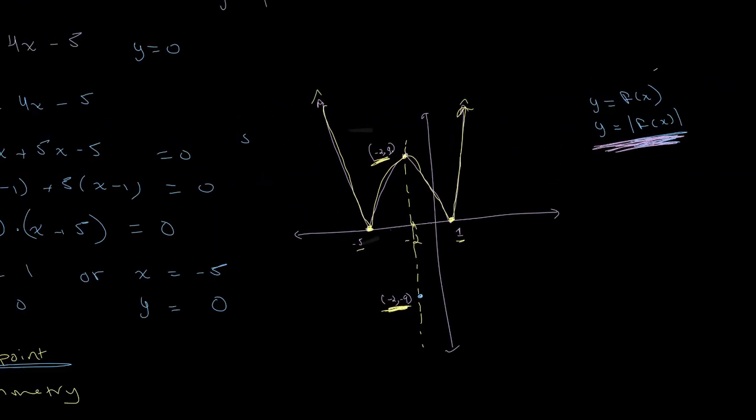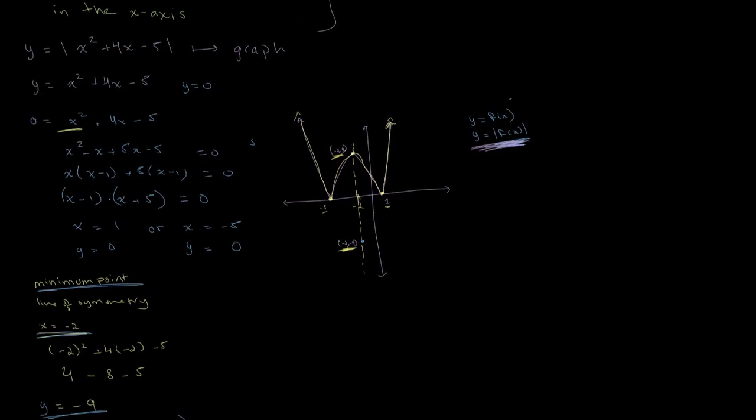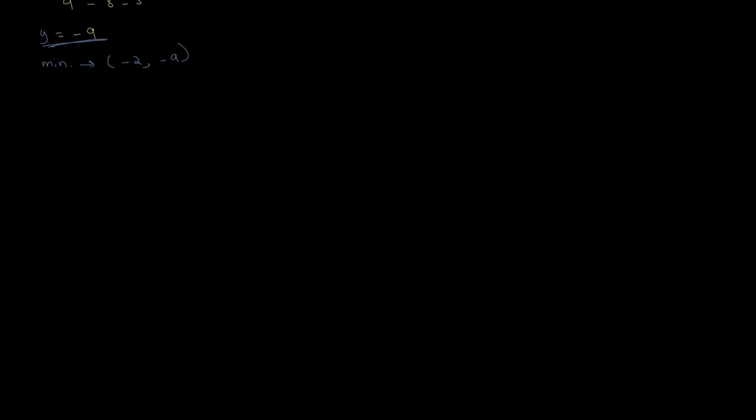Let's look at one more example. Let's say that we have to draw the graph of the equation x squared minus 2x minus 3, and the absolute value of this is equal to y.